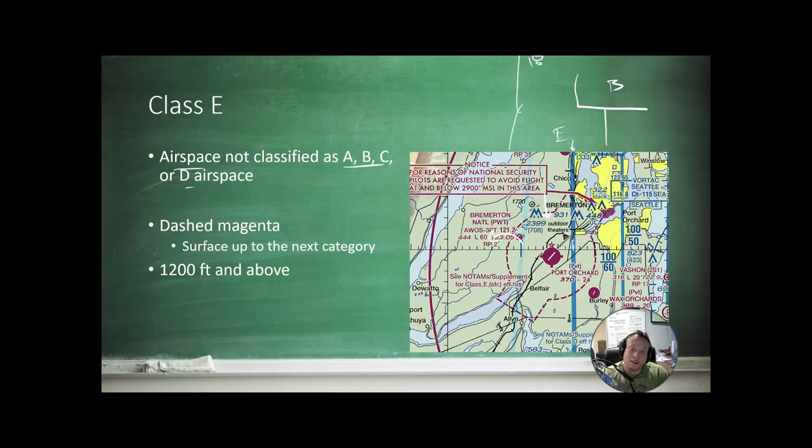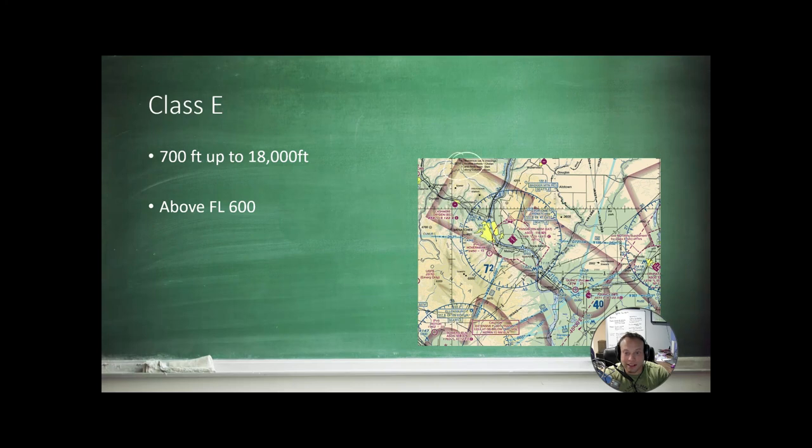And then it becomes Class Bravo, because you're inside the solid blue. On the outside of this magenta line, and inside these vignettes here, these little wishy-washy looking things, is on the inside, it's 700 feet. That's Echo. It starts at 700 feet and goes up to the next overlying airspace. On the outside, like over here on the outside, or the hard side of these magenta vignettes, then it starts at 1,200 feet AGL, and it goes up to the next overlying airspace.